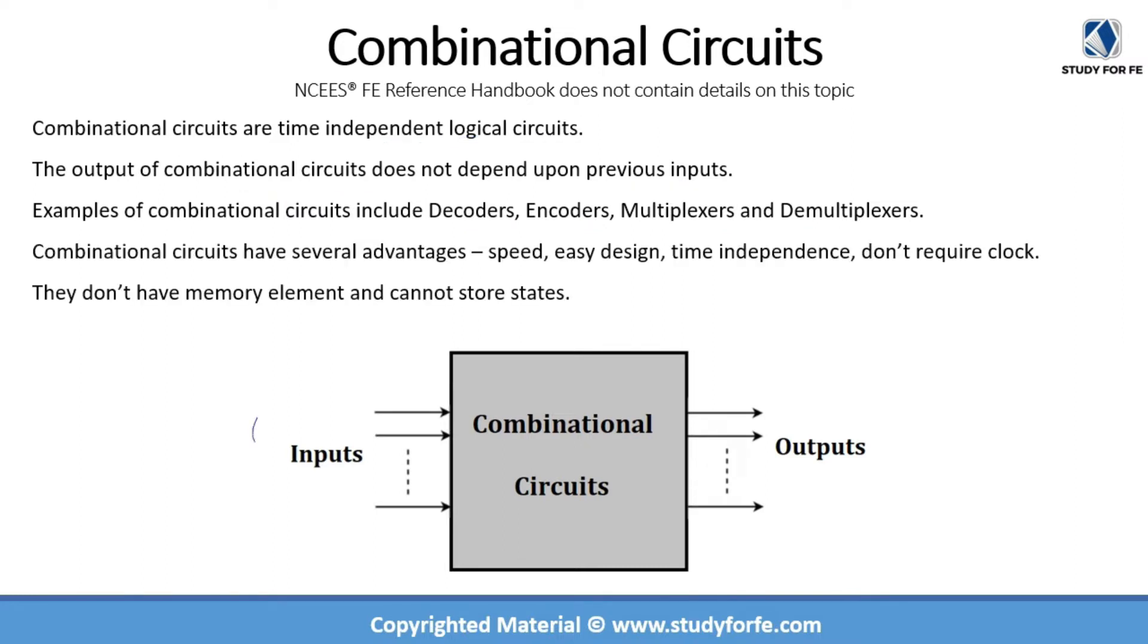Combinational circuits have set number of inputs and set number of outputs, and depending on the combinational circuit that you are looking at, whether it's a decoder, multiplexer, demultiplexer, encoder, and so on, the number of inputs and number of outputs can vary. Combinational circuits have several advantages. They are very speedy, easy to design, time-independent, and they don't require an external clock.